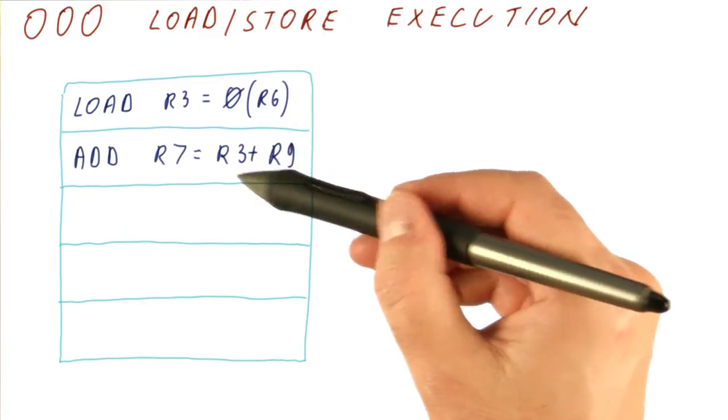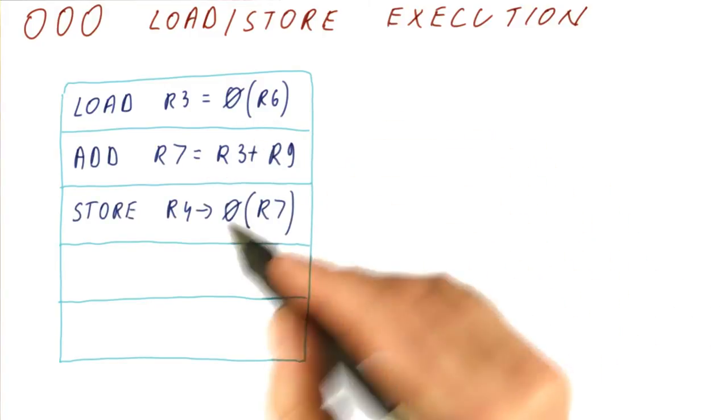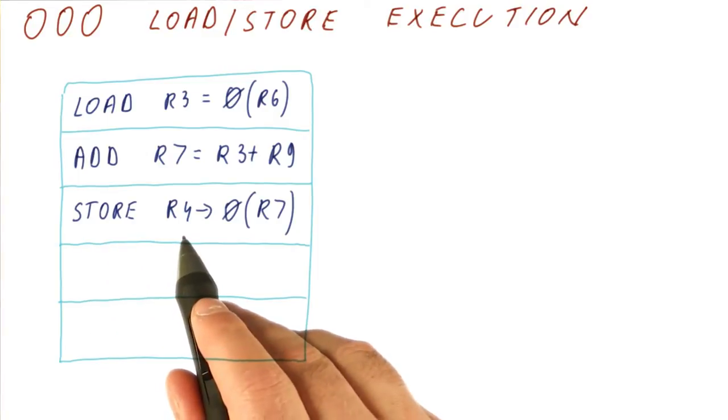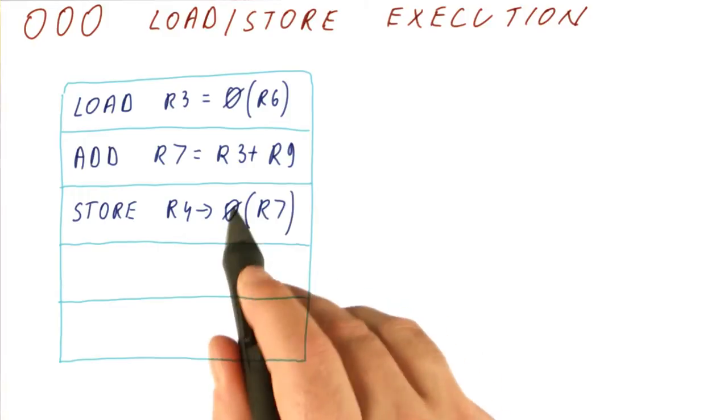Next, we have an add that takes R3, adds R9 to it, and puts the result into R7. Next, we have a store that takes the value from R4 and puts it in a memory location determined by R7.